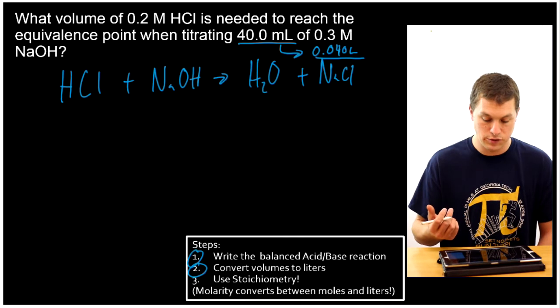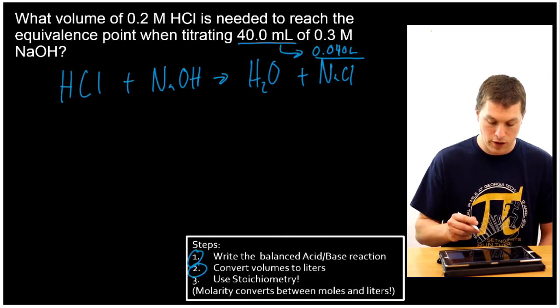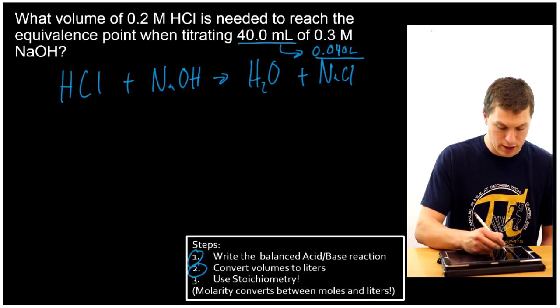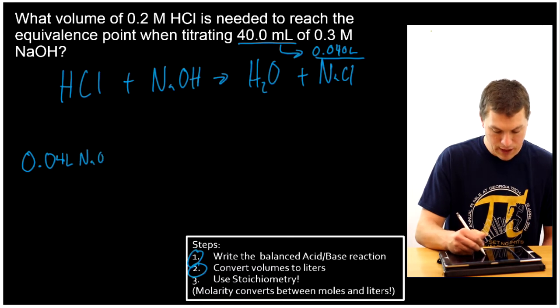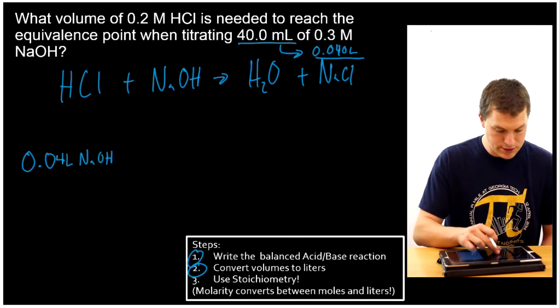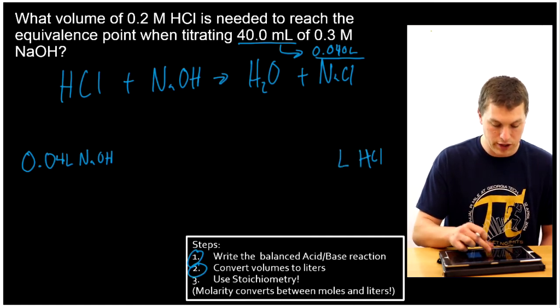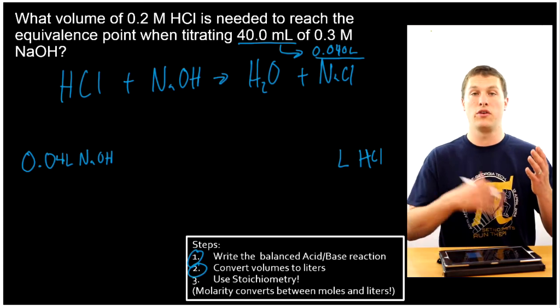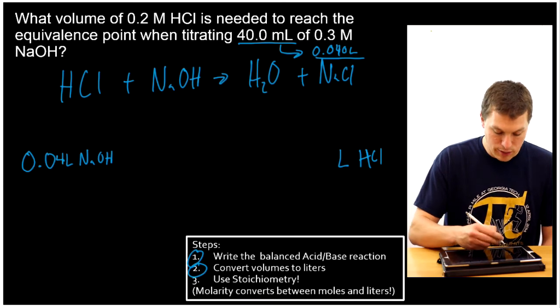And now I'm going to use stoichiometry. I'm going to use my chemical recipe. And in particular, what I'm going to do is I'm going to start with my volume of sodium hydroxide. So I'm going to start with 0.04 liters sodium hydroxide. And my whole goal is to eventually get to my volume of HCl. So in this sort of problem where I'm looking for the volume needed to reach the equivalence point, I'm going to start with volume and I'm going to end with volume.